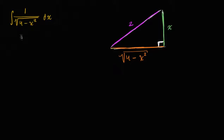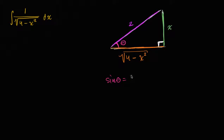This is where the trigonometry comes in. If we define this angle as theta, then sine of theta equals the opposite over the hypotenuse, which is x over two. Or if you solve for x, we get x is equal to two sine theta.